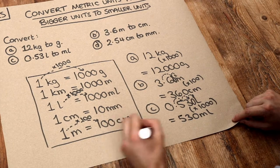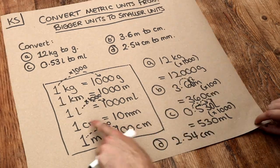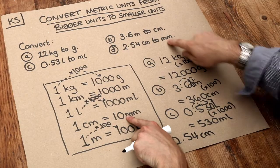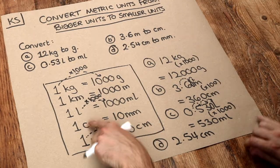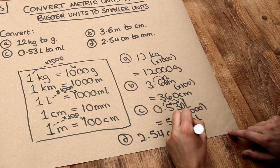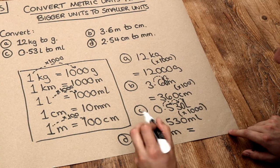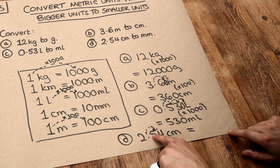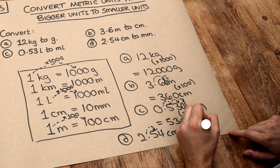And then finally D, 2.54 centimetres. To get from centimetres to millimetres, which is what we want, we have to times by 10. So if we times this by 10, that moves the decimal place once. And we get 25.4 millimetres.